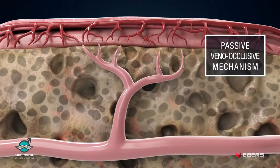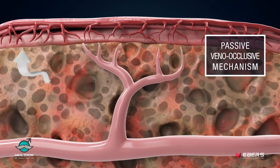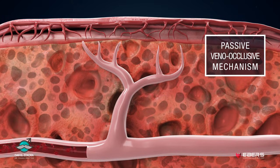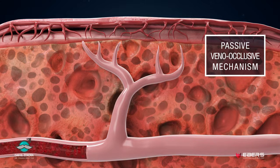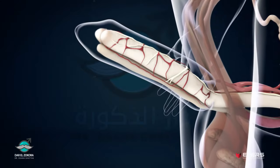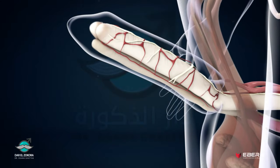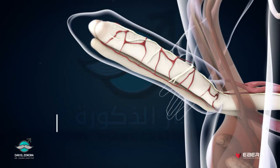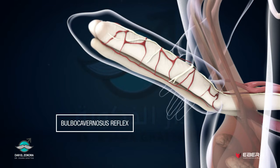Blood congestion takes place because blood flow increases and the helicine arteries become straight and dilated, allowing blood to fill the corpora cavernosa. Afterwards, genital stimulation induces a further increase in penile rigidity, which is called the bulbocavernosal reflex.